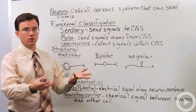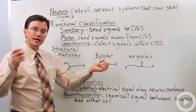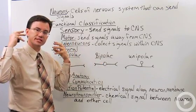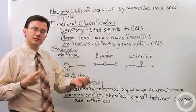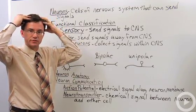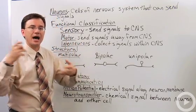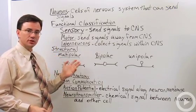Interneurons are the ones that collect those signals that are coming in from the sensory neurons and then decide whether or not to send out the signals by way of the motor neurons. So they're located in the central nervous system. You won't find interneurons outside in the peripheral nervous system.